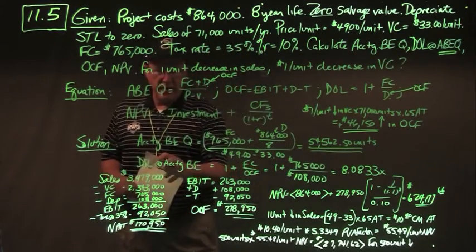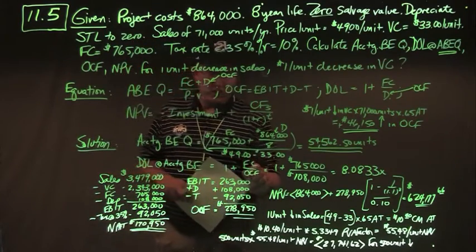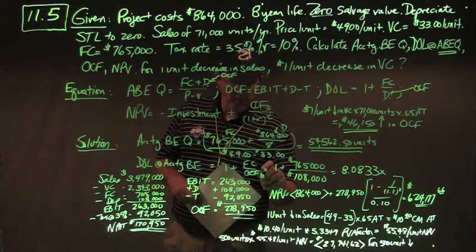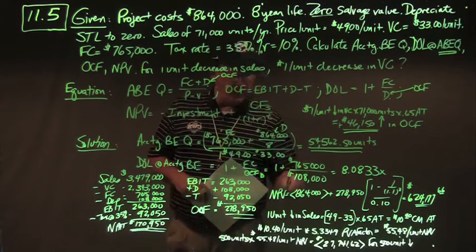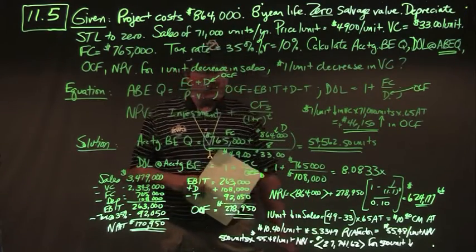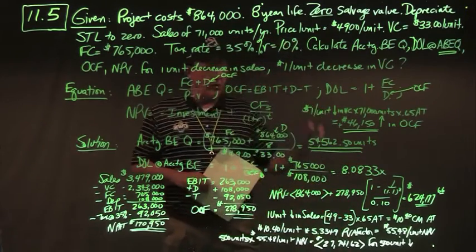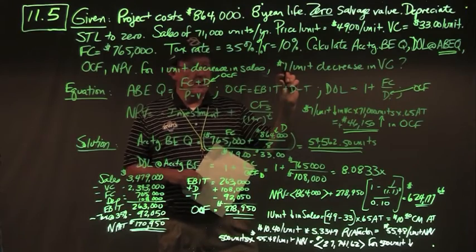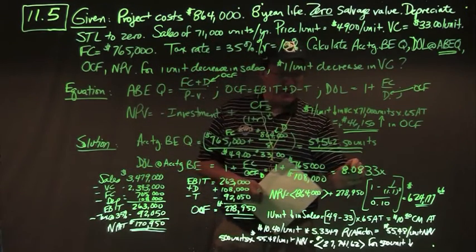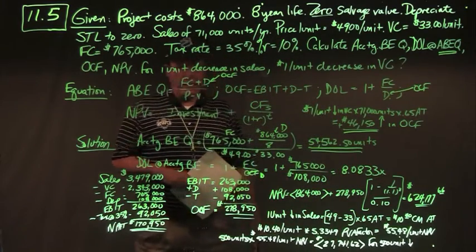Degree of operating leverage at accounting break-even: 1 plus fixed cost over OCF, where OCF equals depreciation. So 1 plus $765,000 divided by $108,000 gives DOL of 8.0833. This means a 10% increase in sales produces approximately an 81% increase in OCF.